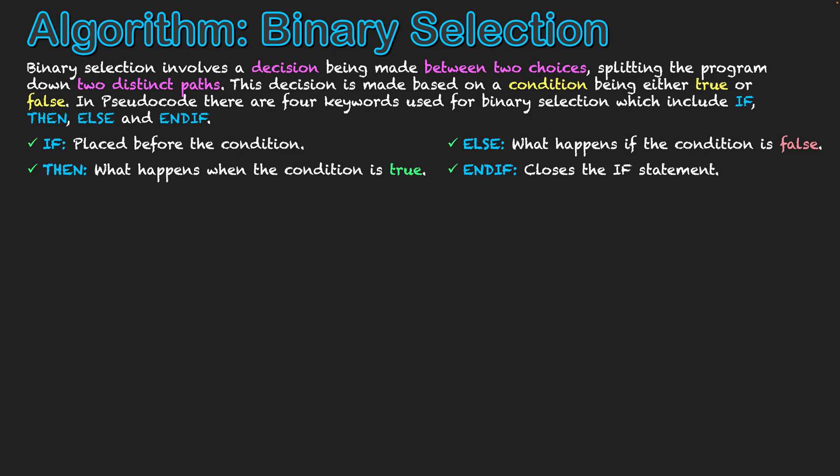And then on the flip side, if user guess doesn't equal two, we then go to else, which is what happens if the condition is false, and there the series of processes will take place when the condition has not been met.